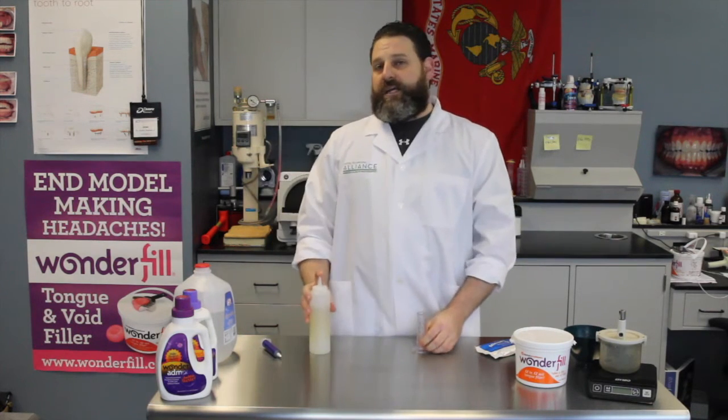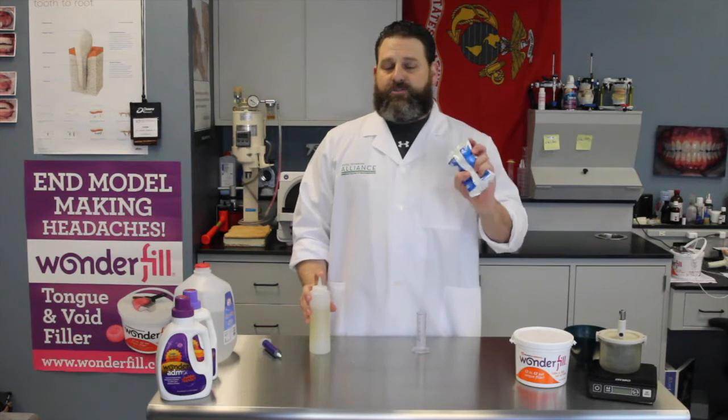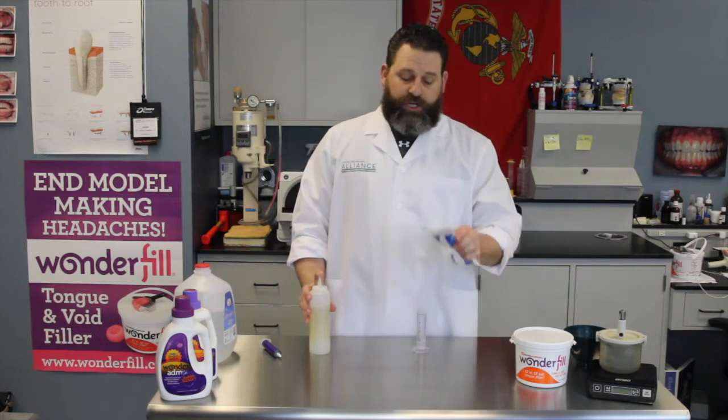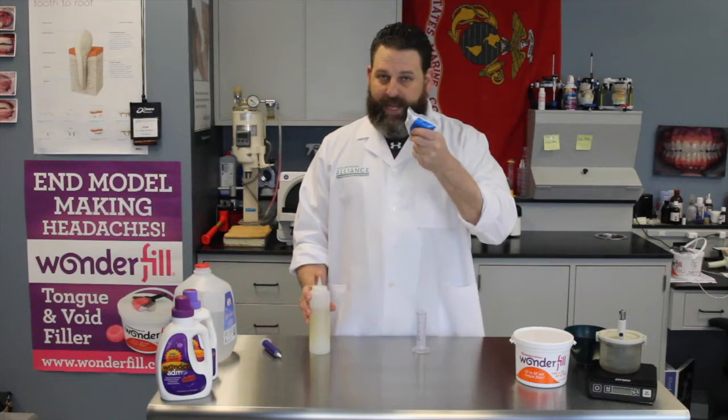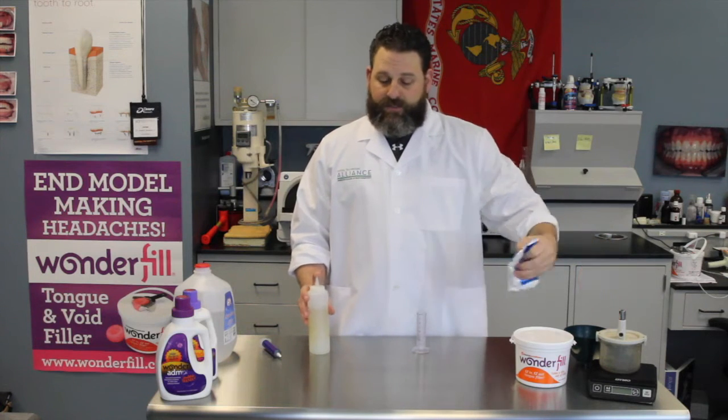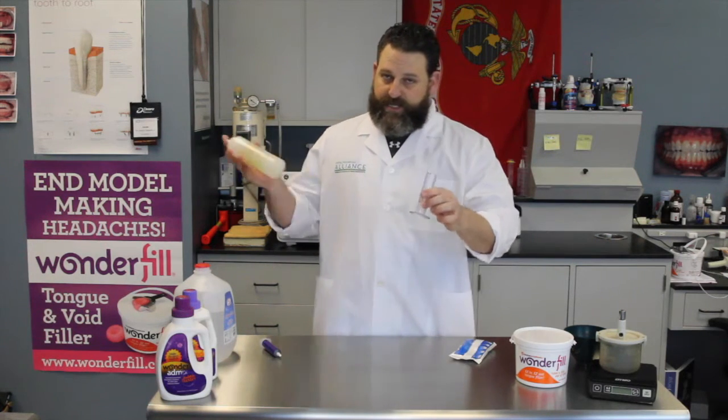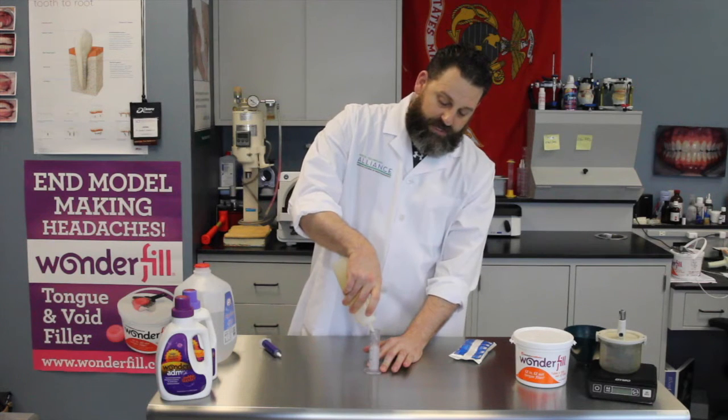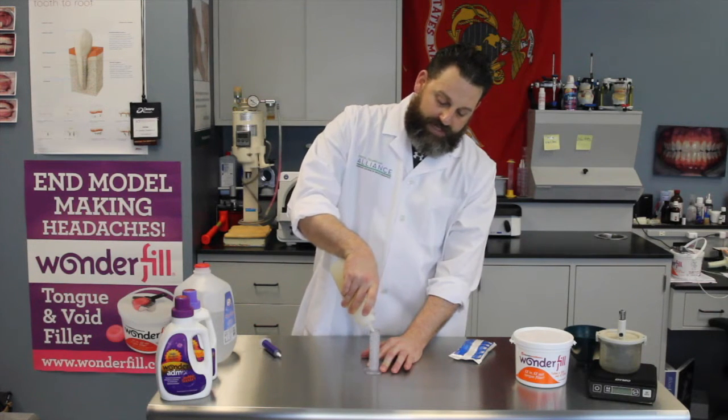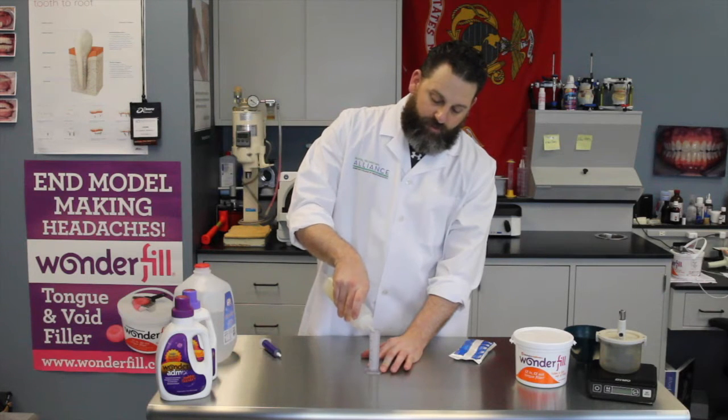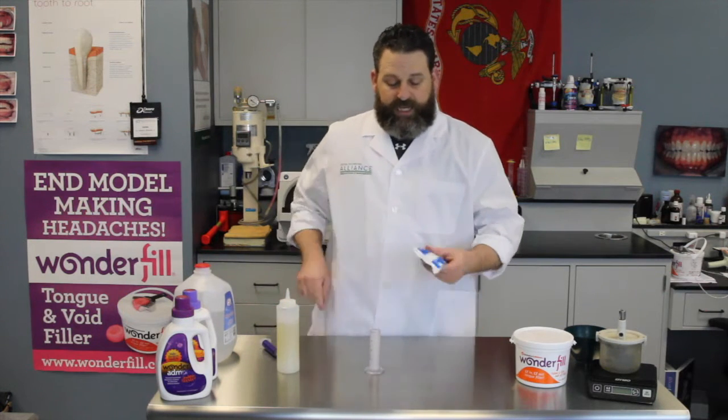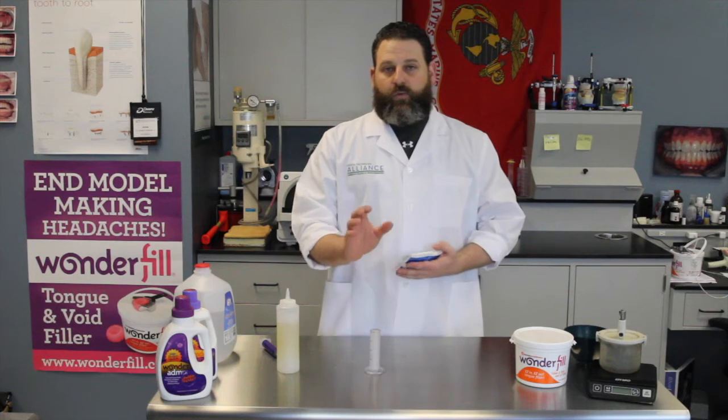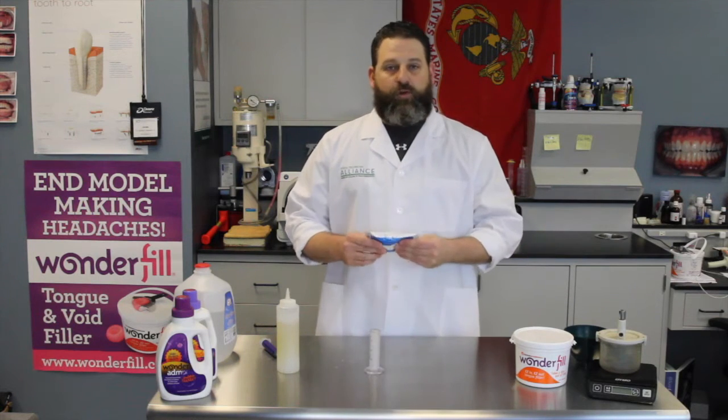So every time you're going to use the Micro Stone, whatever stone that you're going to use, you're going to know the weight, either get the pre-weight packages or weigh it out and then use your graduated cylinder to fill up your admix. This is all I'm going to do for my model that we're going to be making. Fill it up to the 41. And now we have the proper water powder ratio for the model.